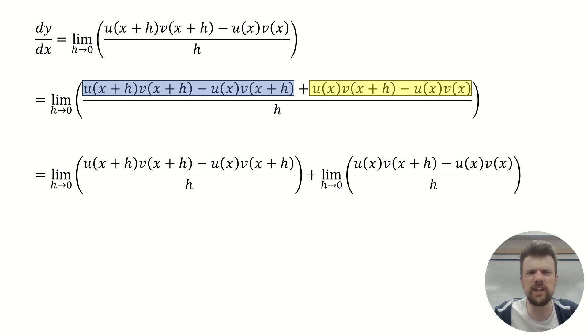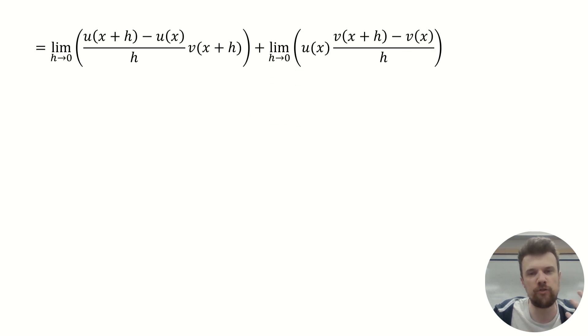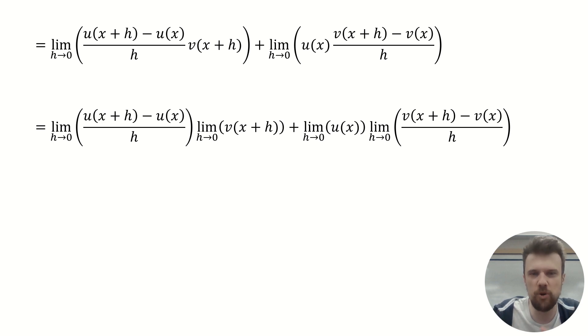But why is that helpful? Well, now, in both of those fractions, we've got some stuff that we can factorize. In the first fraction, in the numerator, you might notice there's a v of x plus h appearing everywhere. So that means we can factorize it out the front. So, let's do that. And then also, in the second fraction, we've got a u of x appearing in both things in the numerator. So we can also factorize u of x out of everything in that fraction too. So, doing both of those factorizations, we get this. But then, because inside those two limits, we have something times by something else, then we can also now view that as taking the limits of those two individual things and then multiplying them together. So, we get this.